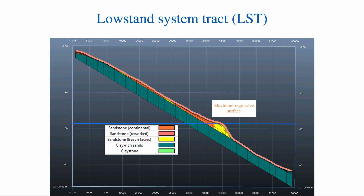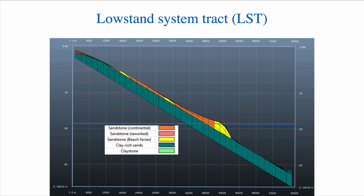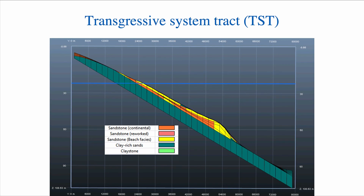That's an interesting surface, the maximum regressive surface, although it's not always easy to track. But interestingly, once you're at low stand, there's only one way that base level is going to change and that is by going up. When base level rises, the trajectory of the coastline changes — it essentially now shifts back towards the continent. So we have a back-stepping of the shoreface towards the continent, and that's a characteristic of the TST.